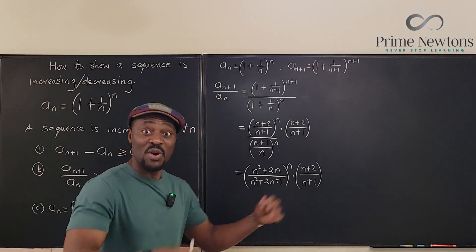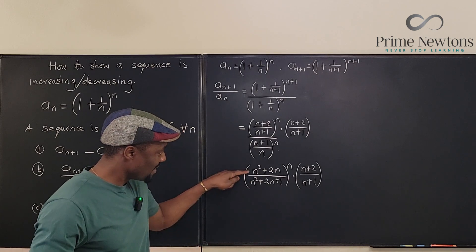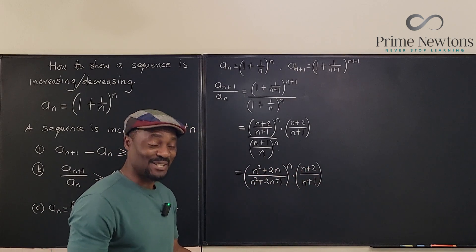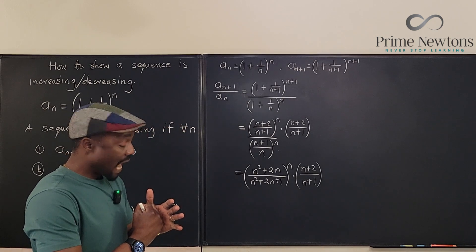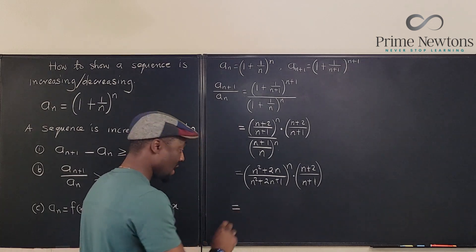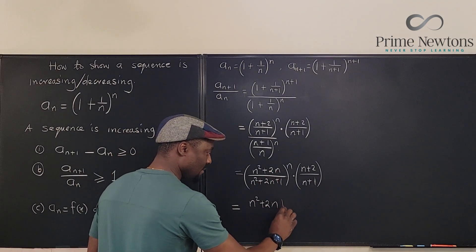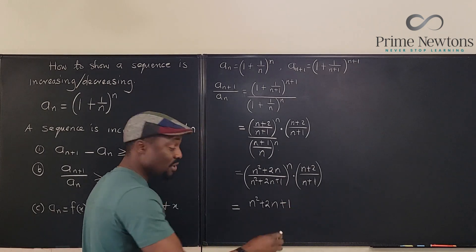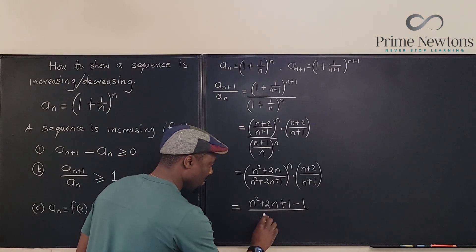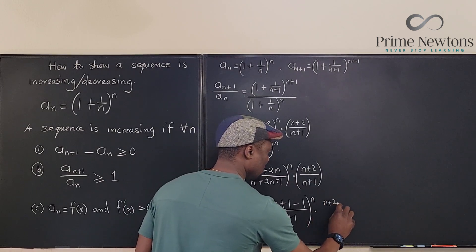I want to show this expression is greater than one. The denominator of the fraction inside is bigger than the numerator, but (n+2)/(n+1) is greater than one — so it's not immediately clear which dominates. The trick: rewrite n²+2n as (n²+2n+1) − 1. Now I can split the fraction into [( n²+2n+1)/(n²+2n+1) − 1/(n²+2n+1)] raised to power n, times (n+2)/(n+1).